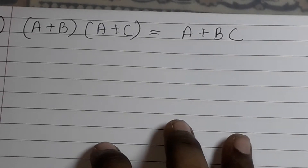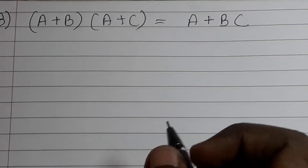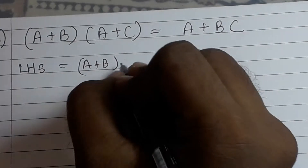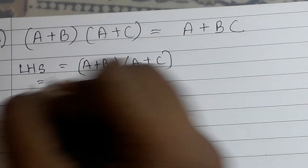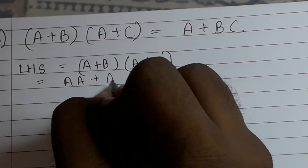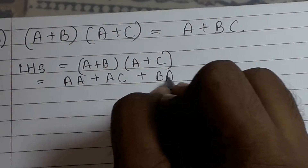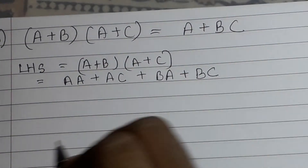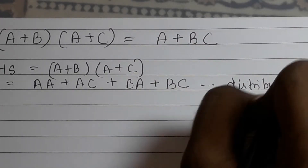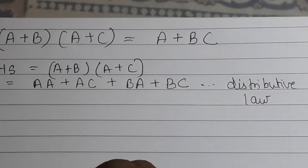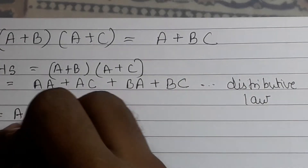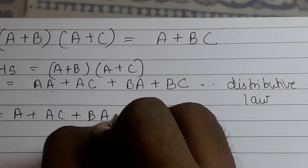Third question. LHS equals (A plus B) into (A plus C). By distributive law this can be written as A·A plus A·C plus B·A plus B·C. A into A is A, so we get A plus AC plus BA plus BC.